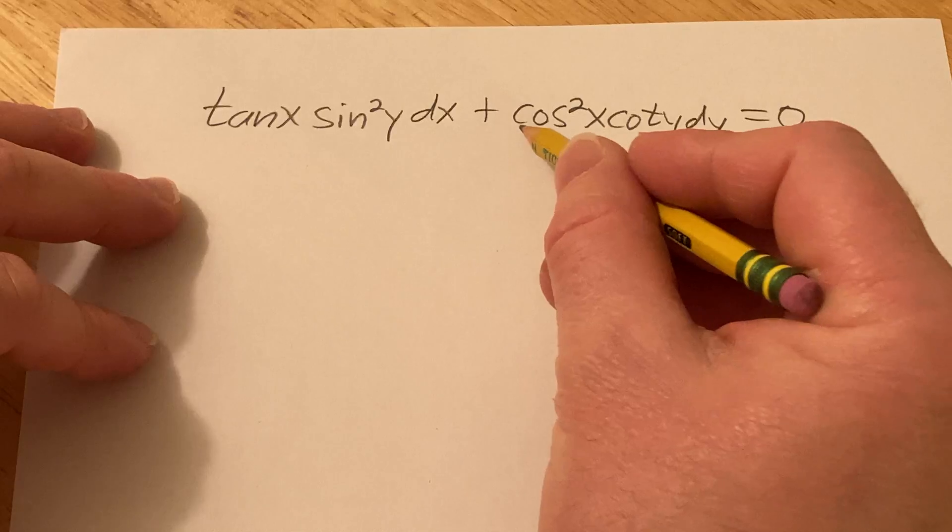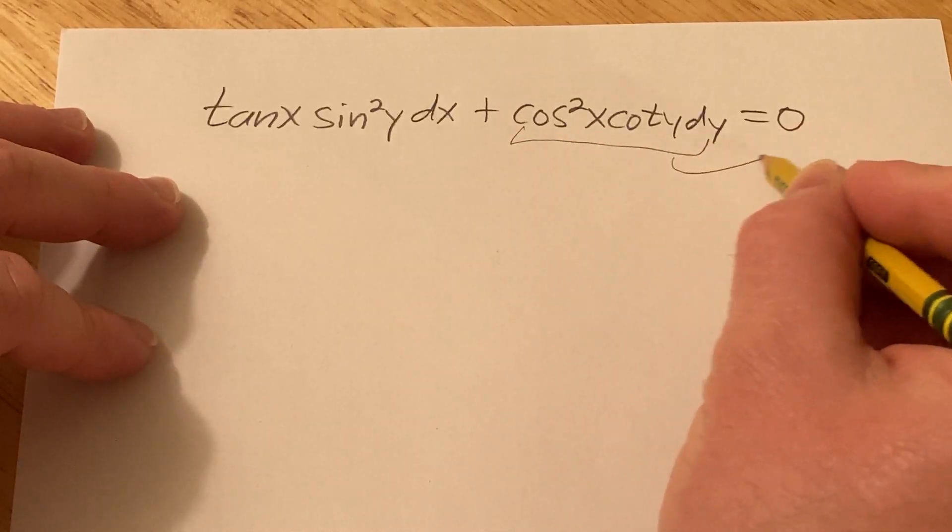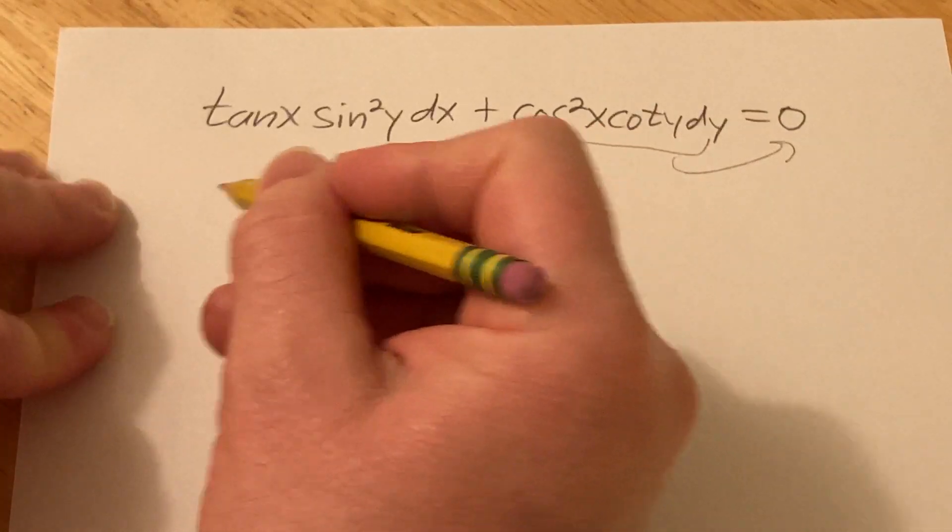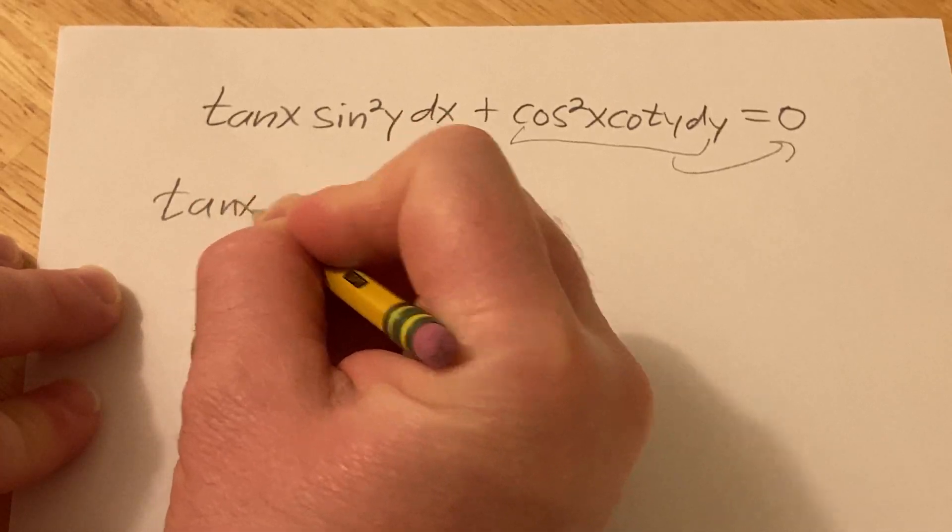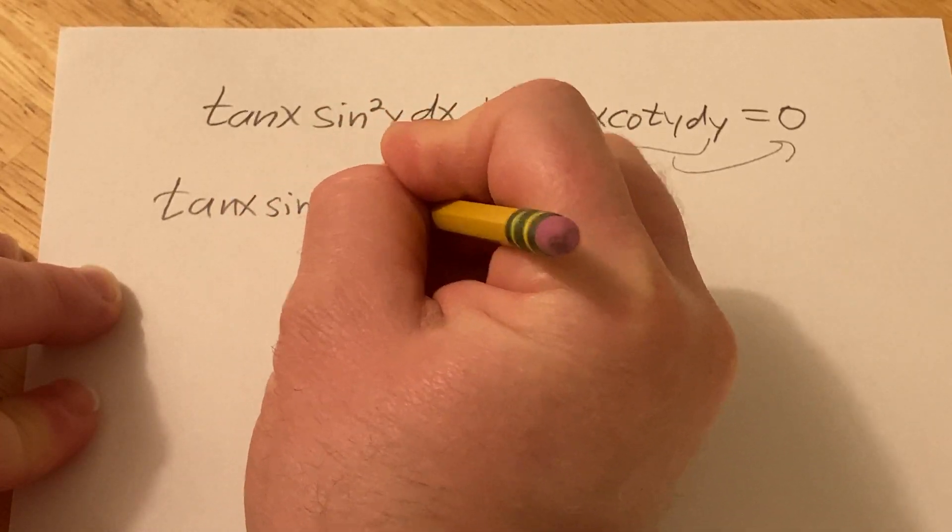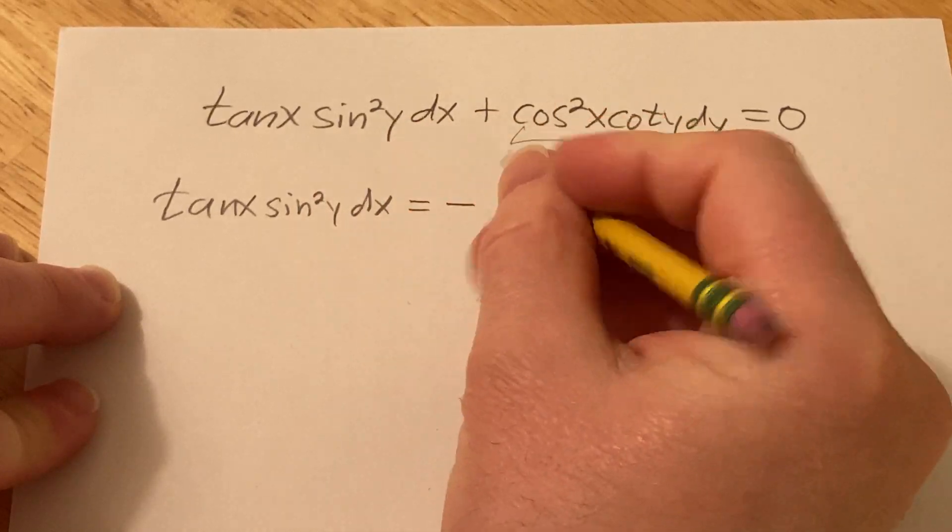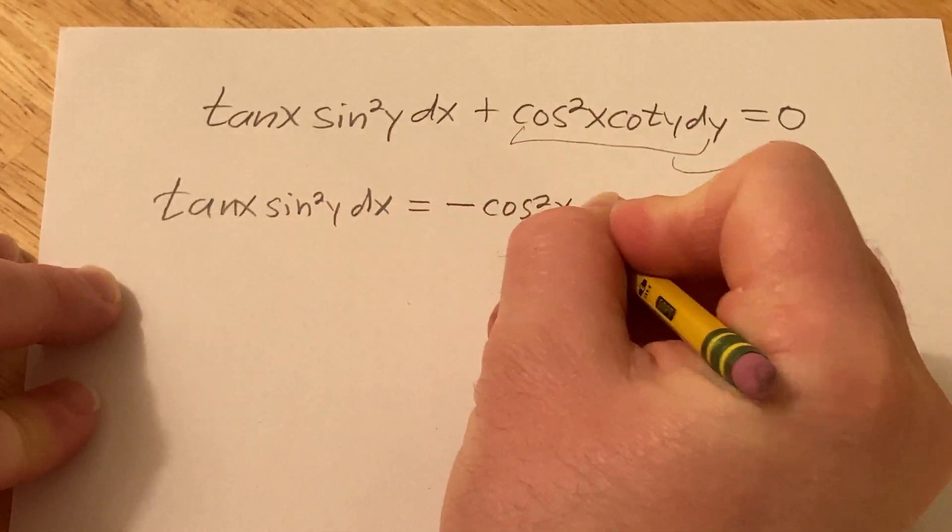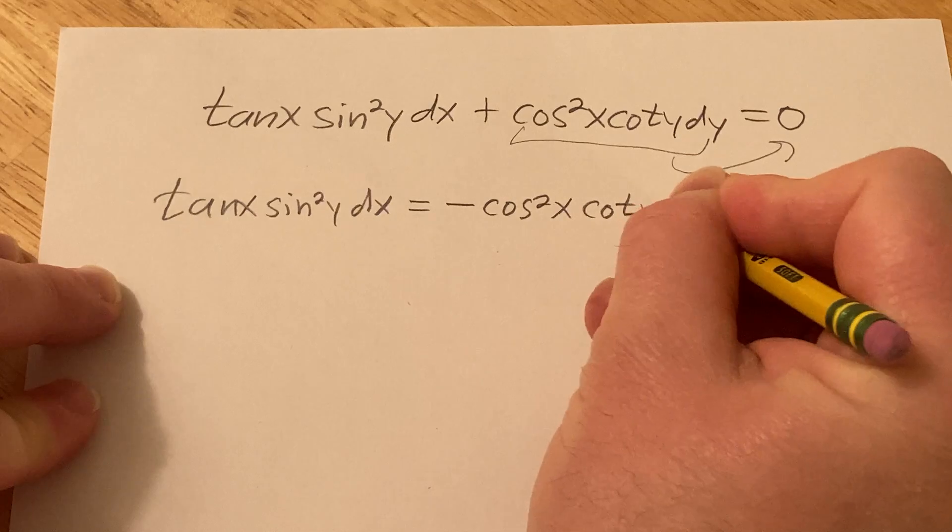So let's go ahead and start by just taking this and subtracting it over this way. So we have tangent of x sine squared y dx equals negative cosine squared x cotangent y dy.